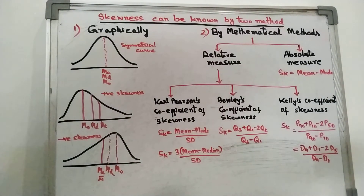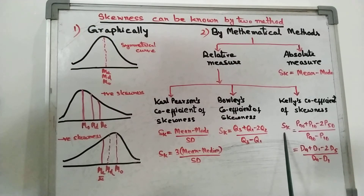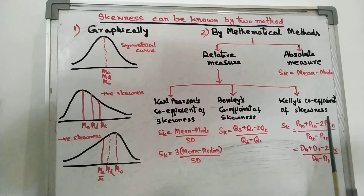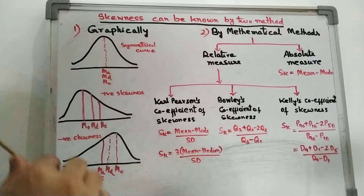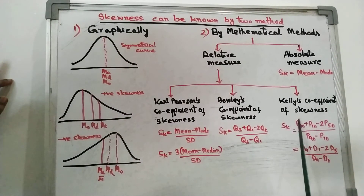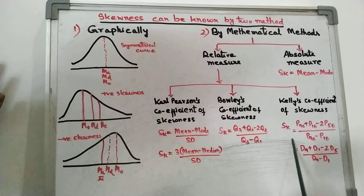These formulas help us to find the extent or magnitude of skewness. Now look at Kelly's coefficient of skewness, which is the third formula. Here skewness uses percentile — the formula is: Sk = (P90 + P10 − 2P50) / (P90 − P10). These formulas are designed to be unit free, so they help us compare skewness of two or more series — that is why they are called relative measures. This formula is based on percentile, so you need to find the percentile values first, then put them in the formula to get the skewness value.